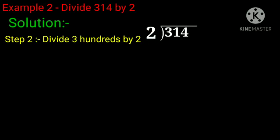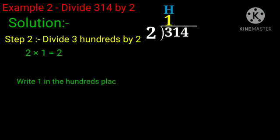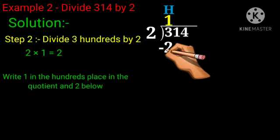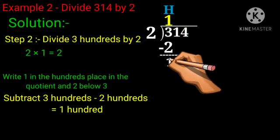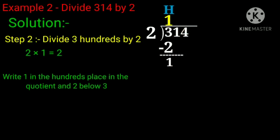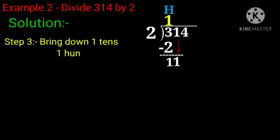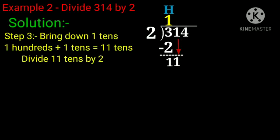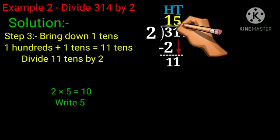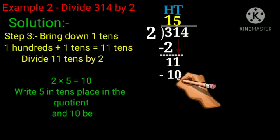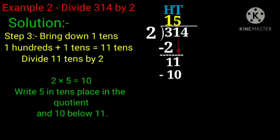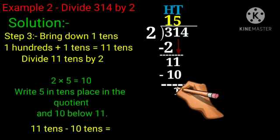So we take 2 multiplied by 1 equals 2. Write 1 in the hundreds place in the quotient and 2 below 3. 3 minus 2 equals 1. Now bring down 1. 1 and 1 will make 11. Divide 11 by 2. We know that 2 fives are 10 and 2 sixes are 12. So write the number which is less than 11. We take 2 multiplied by 5 equals 10. Write 5 in tens place in the quotient and 10 below 11. 11 minus 10 equals 1.